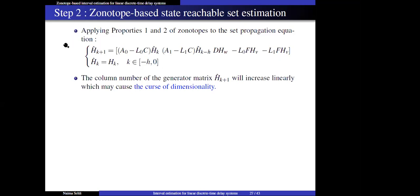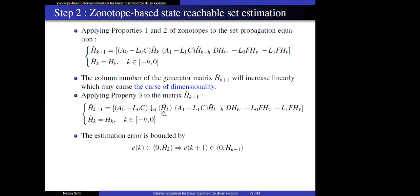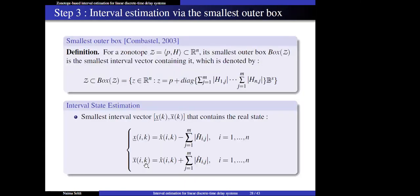To avoid growth of computational complexity due to the increasing number of columns, a reduction operator is used. The matrix H-hat k is replaced by Q(H-hat k), where Q limits the maximum number of columns after reduction. The zonotope reachable set of the error can then be determined step by step. Using x_k = x-hat_k + e_k, the estimated set of the state can be deduced. Finally, after estimating the zonotope reachable set of the state, the smallest outer box is used to calculate the tightest upper and lower bounds of x_k.